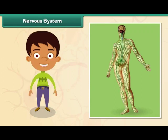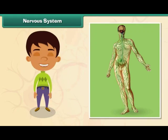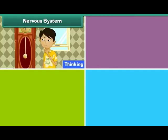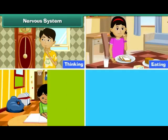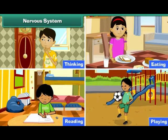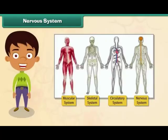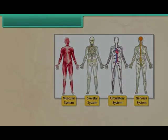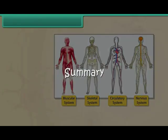Nervous system: The human nervous system consists of the brain and nerves. It controls all physical and mental human activities such as thinking, eating, reading, and playing. All the other organ systems and their functions are controlled by the nervous system.